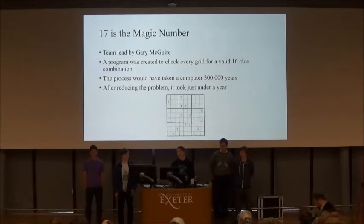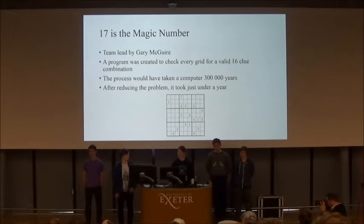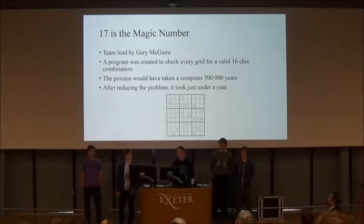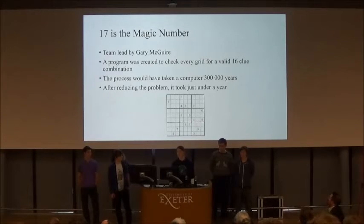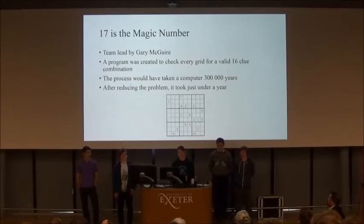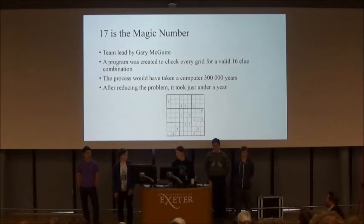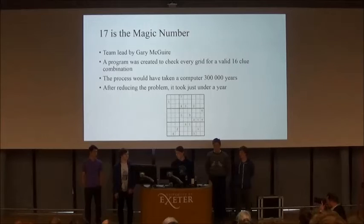There are around 6.7 × 10²¹ grids in existence — that's a lot. The computer at the time would have taken around 300,000 years, and nobody has that much patience. So in order to break down the problem, they used the similar properties of Sudoku families and only had to check through one grid from each family. This meant there were only just under 5.5 billion grids to check. After reducing it down by this much, it took just under a year — still a long time, but much shorter than before.